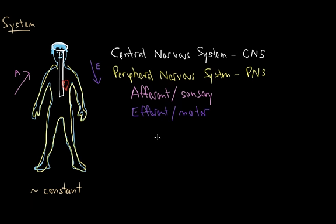This efferent motor response is still pretty broad, because what does it really mean to have a signal go out? It turns out there are two types of signals that the brain sends out. There are ones that we can consciously control, like moving our quadriceps muscle in our legs, or our biceps muscle in our arms.